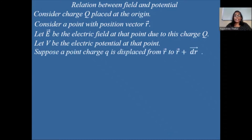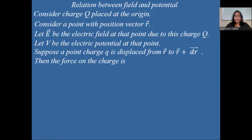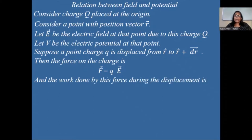Suppose a point charge q is displaced from R to R plus dr. Then the force on the charge is given by F equals Q into E — F is a vector, electric field is a vector. The work done by this force during the displacement will be given by dw, which will be equal to Q into E dot dr, because we are replacing F with QE.